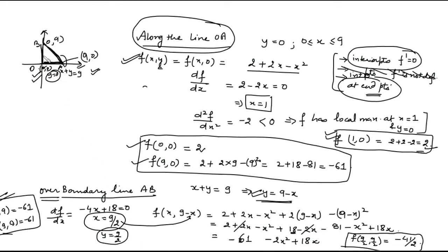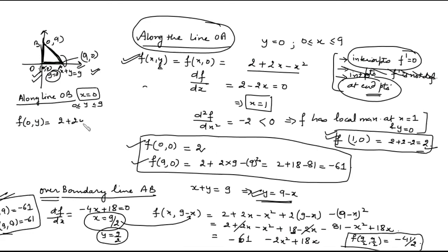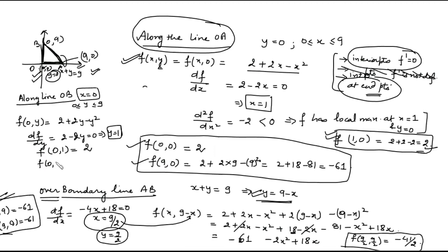Along line OB, x = 0 and y varies from 0 to 9, so the function becomes a function of y alone. Taking its derivative and setting it to zero gives the critical point y=1, so the point is (0,1). The value of the function at (0,1) is 2. At the endpoints, at (0,0) the value is 2, and at (0,9) the value is −61.